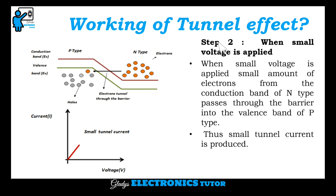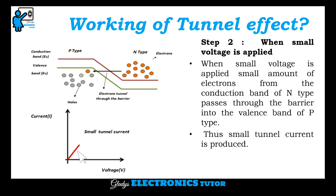Step 2 is when a small voltage is applied. When small voltage is applied, a small amount of electrons from the conduction band of N type passes through the barrier into the valence band of P type. Thus, a small tunnel current is produced.